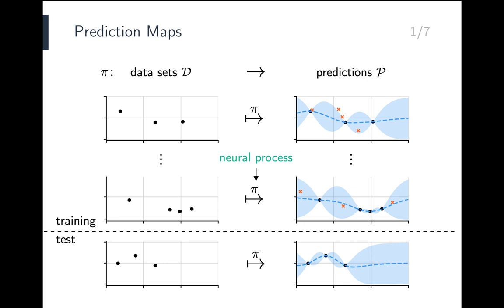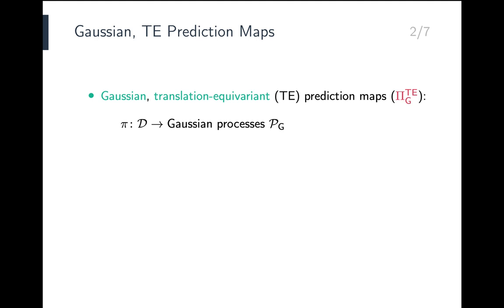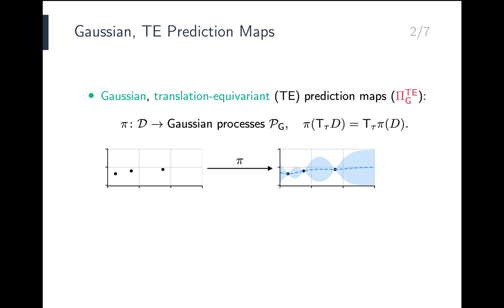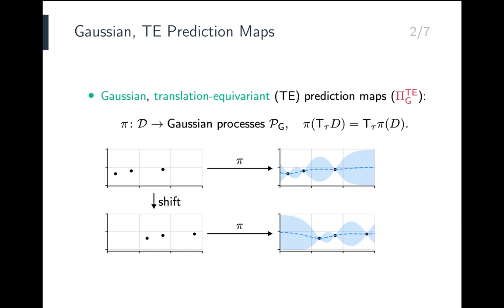Moreover, compared to Gaussian process regression, which requires an appropriately chosen kernel function, neural processes are fully data-driven. In this presentation, we focus on prediction maps that are Gaussian and translation equivariant. We call a prediction map Gaussian if it maps to Gaussian processes, and translation equivariant if prediction and translation commute. To build some intuition, if we shift a dataset by a certain amount, translation equivariance states that the corresponding prediction should equal the original prediction shifted by the same amount.